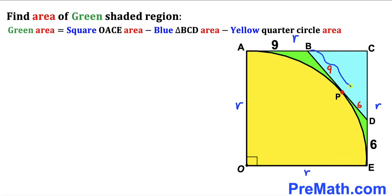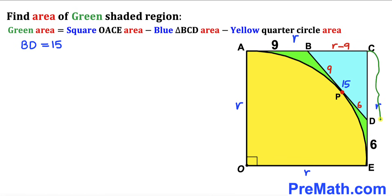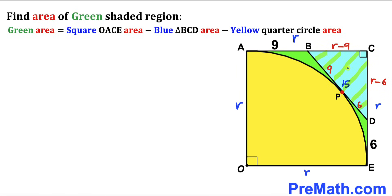Therefore, total length BD is 9 plus 6, which equals 15 units. Since the whole side length is r and one part is 9, the remaining segment BC is r minus 9. Similarly, the whole side is r and one part is 6, so segment CD is r minus 6. We now focus on right triangle BCD with side lengths r minus 9, r minus 6, and hypotenuse 15.